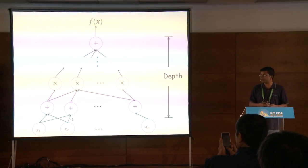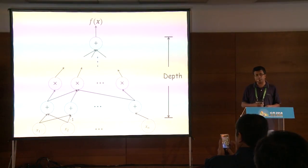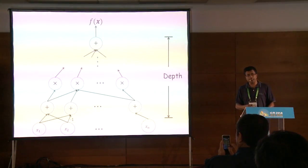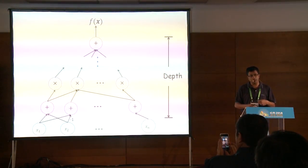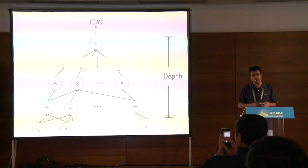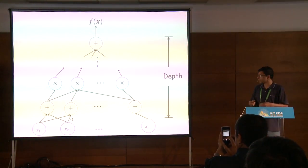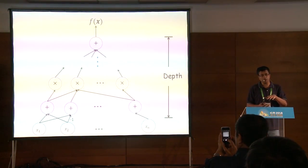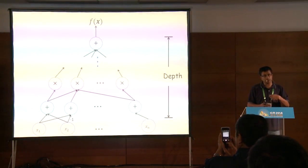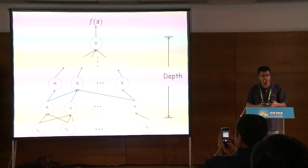We also care about the depth of the circuit, which is the longest path from an input node to the output. The significance of depth is that it captures the amount of parallelization in the computation. If the circuit is very shallow, you get your answer very fast.